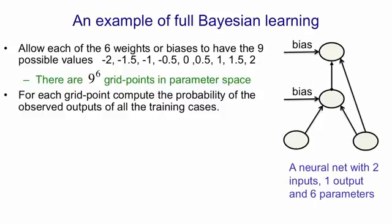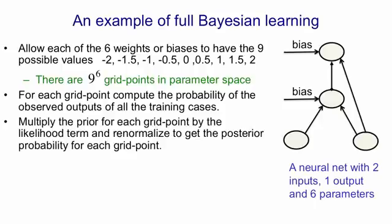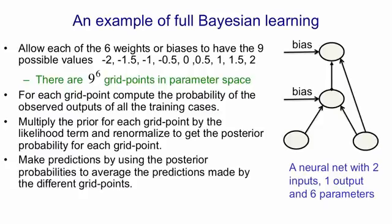For each of those grid points we compute the probability of the observed outputs on all the training cases. We multiply by the prior for the grid point which might depend on the values of the weights for example and then we'd renormalize to get the posterior probability over all the grid points. Then we make predictions using those grid points but weighting each of their predictions by its posterior probability.